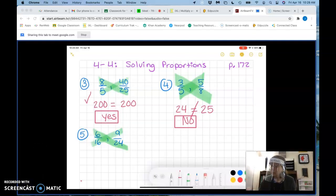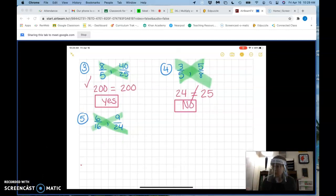Last one to see if these two ratios form a proportion. What is six times 24? 144. What is 16 times 9? 144. So do these two numbers equal each other? Yes. So are they a proportion? Yes, they are.